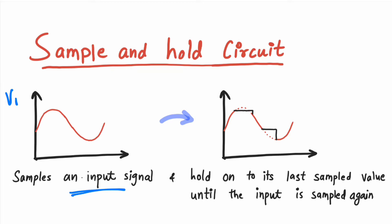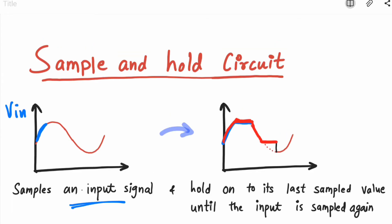This is the input signal Vin. The sample and hold circuit will take a sample of your input signal, then it will hold it for a particular time period until the input is sampled again. In this hold part, the output remains constant — it holds its last sampled value — and then it starts sampling again. This process continues, which is why the circuit is called a sample and hold circuit.